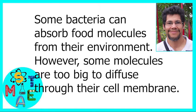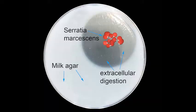Some bacteria can absorb food molecules from their environment. However, some molecules are too big to diffuse through their cell membrane and must be broken down or digested before absorption. Bacteria practice extracellular digestion by secreting enzymes that digest food molecules in their environment. Small molecules that result from the enzymatic breakdown are able to diffuse into the cell to be used for energy and growth.